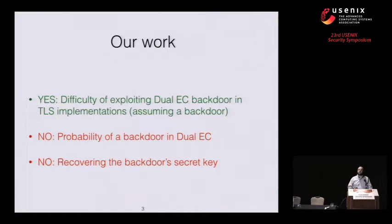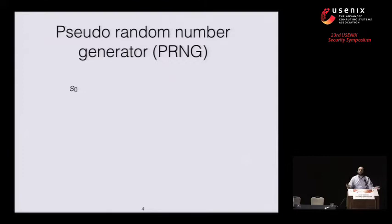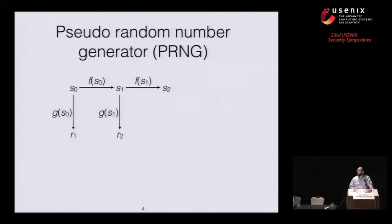How does a PRNG work? It's pretty straightforward: you have an initial state S0, to which you apply a pair of functions F and G. F of S0 gives you a new state S1; G of S0 gives you a new output R1. This process repeats and you get new random numbers. The key thing is you must keep the state secret — if you leak the state, you can recover all future outputs.